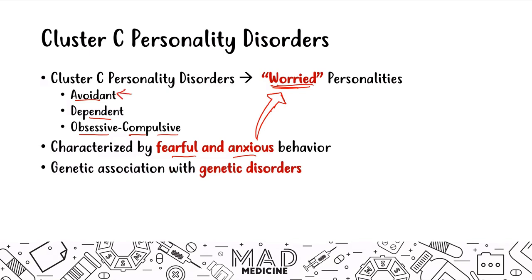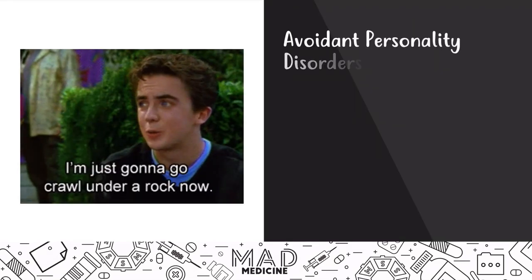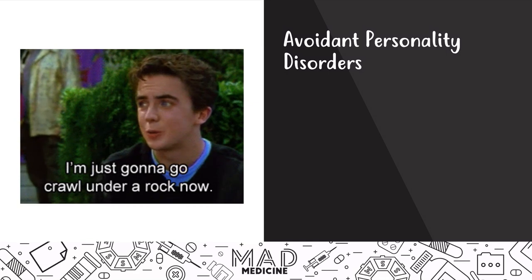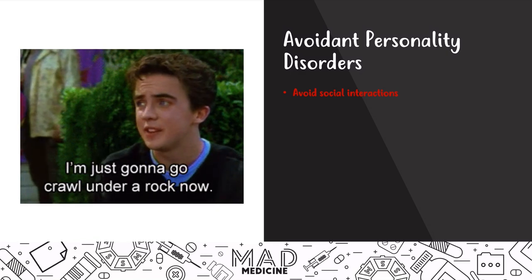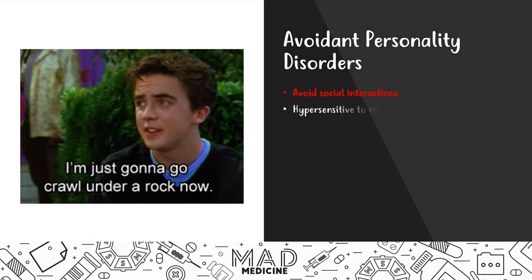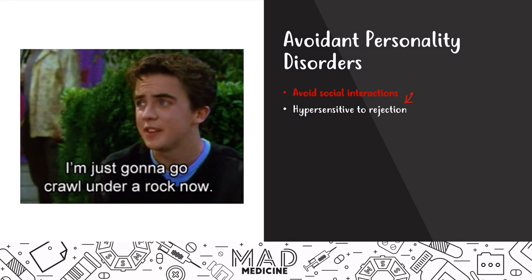Let's start talking about avoidant personality disorder. For Step 1, you're going to be able to spot someone who has avoidant personality disorder very easily because the characteristics are very different from the cluster A and B personality disorders. These people avoid social interactions. Now this is similar to schizoid personality disorder from cluster A, but it's different because in schizoid personality disorder, those people have a voluntary desire to avoid social interaction. In avoidant personality disorder, it's involuntary — they are hypersensitive to rejection, and it's actually kind of a phobia.